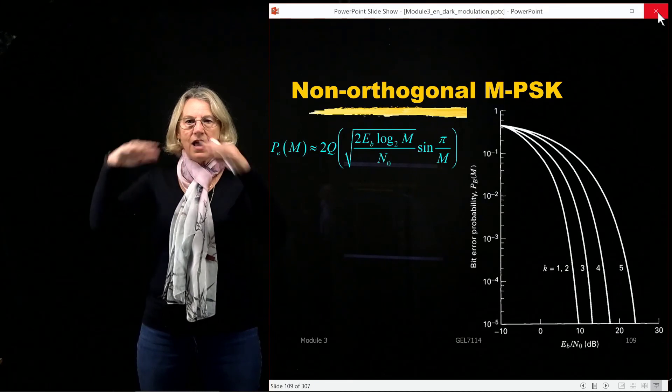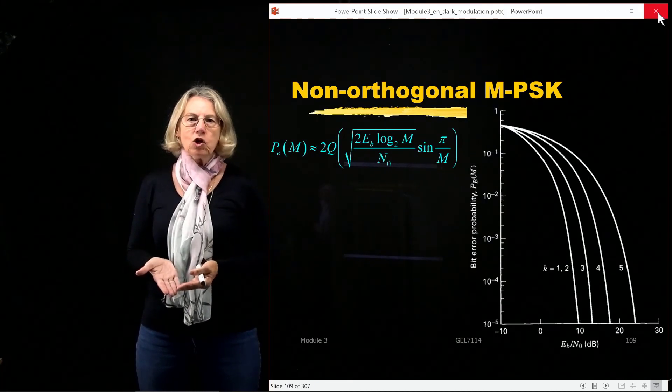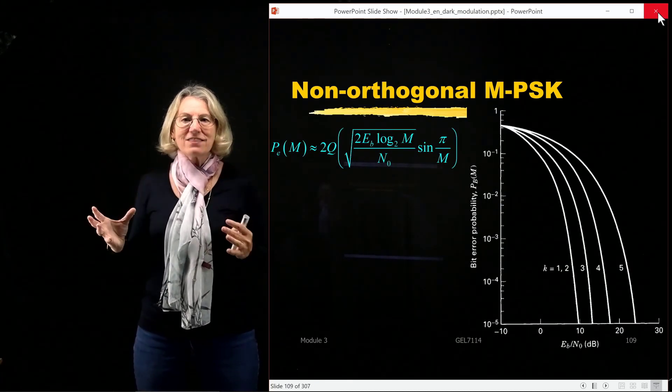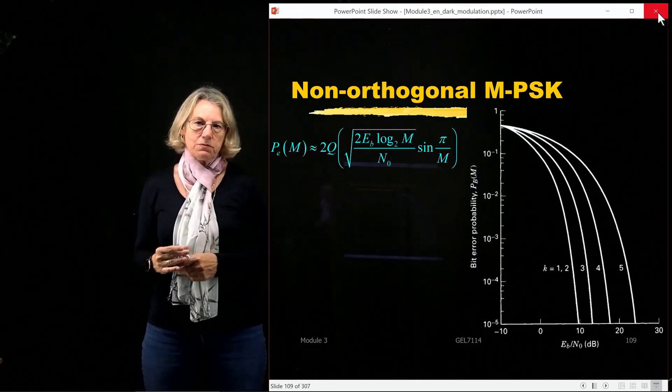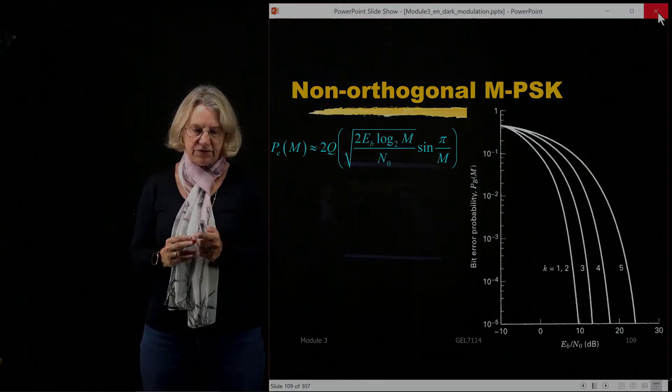Now, in this case, they're always around the unit circle, and the more symbols I add, the closer I'm forcing these symbols to be and the performance deteriorates.